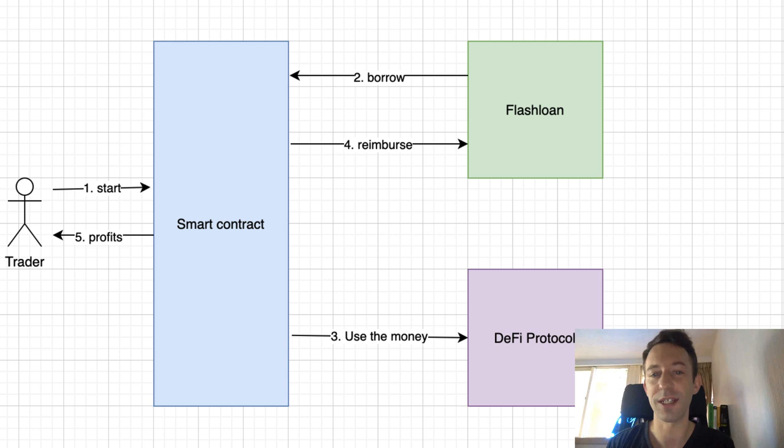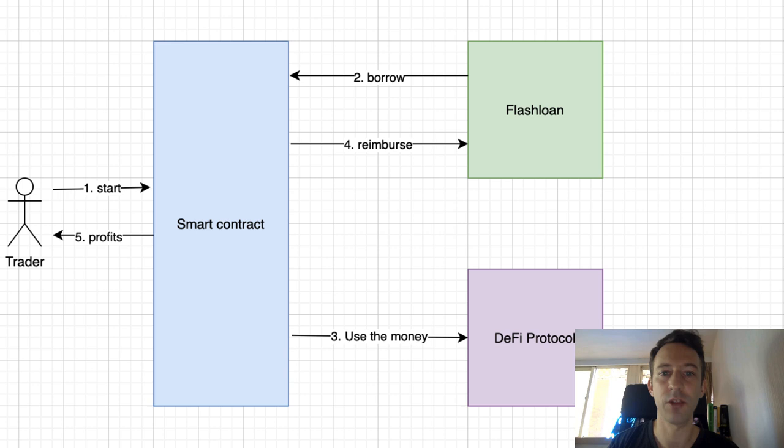What's really important to understand is that everything happens in a single transaction. If your smart contract doesn't reimburse the money to the flash loan at the end of the transaction, or only reimburses part of it, the flash loan smart contract throws an error and the whole transaction fails. So there is no way to cheat the system by borrowing money and not repaying it.